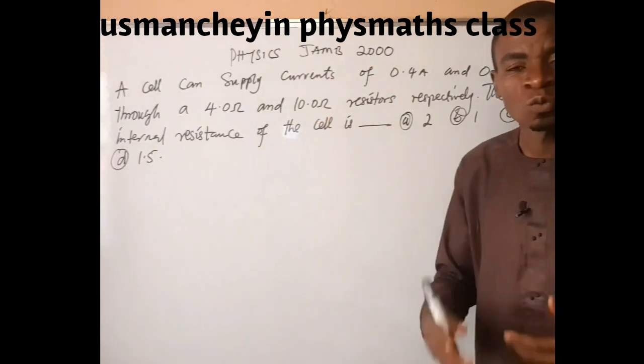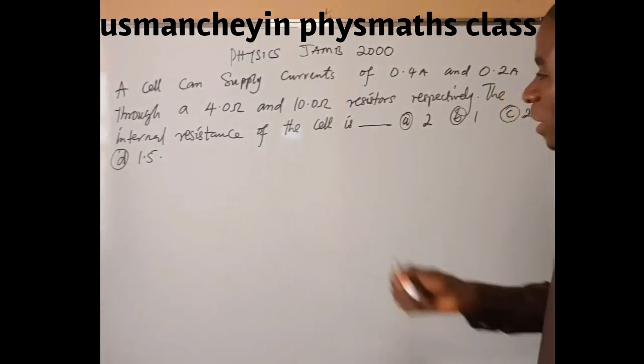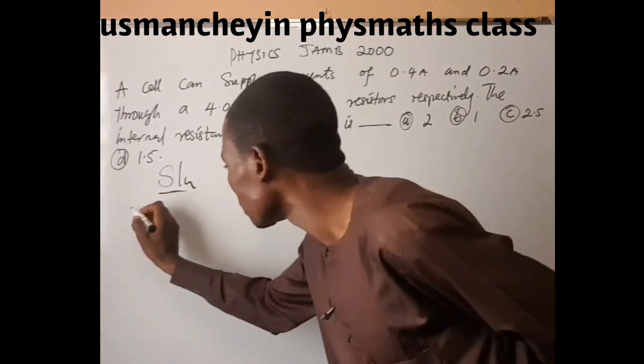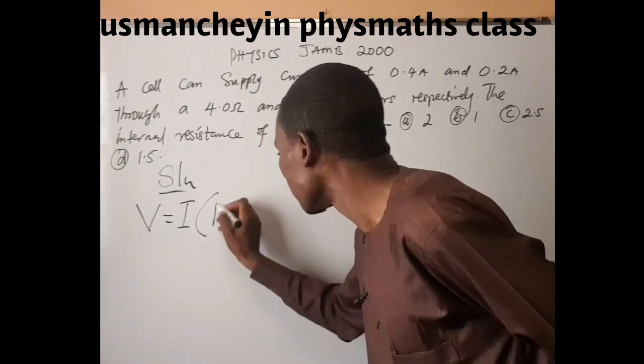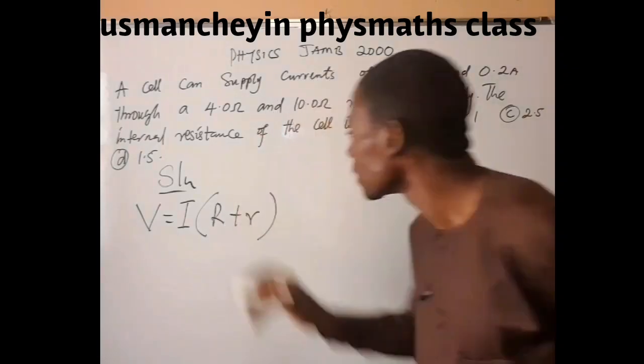They're asking us to look for the internal resistance. The relationship is V equals I times open bracket, the external resistance plus the internal resistance, close bracket.